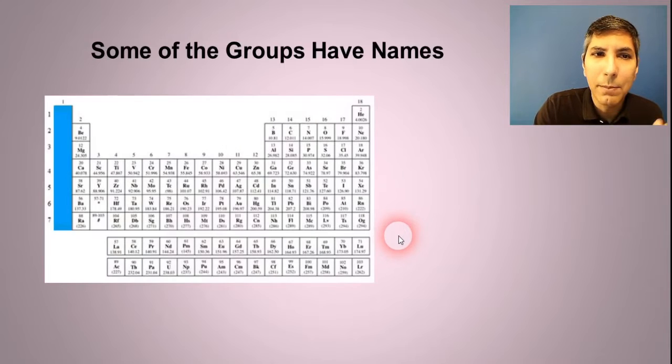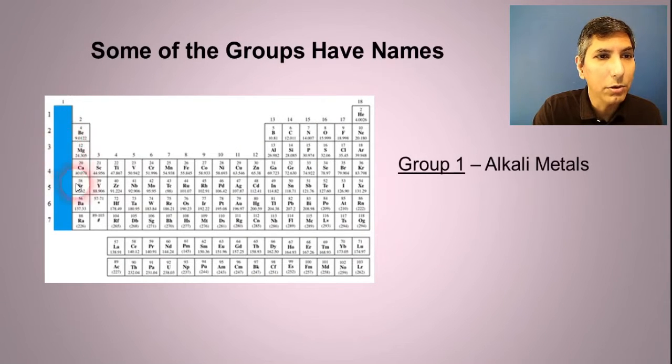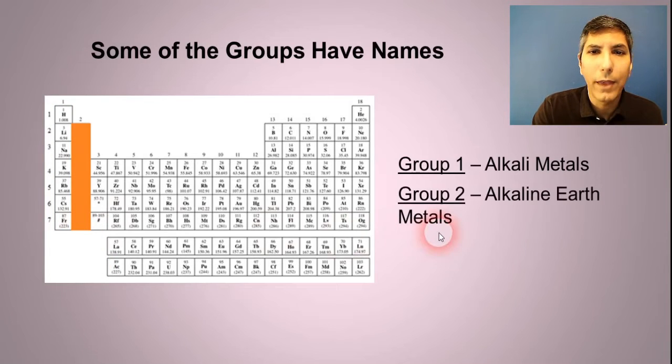Now some of these groups do have names that you need to be aware of. For example, group one, those are called the alkali metals. These are just names that you have to learn. Group two, those are called the alkaline earth metals. Be careful there. Sometimes students get confused between group one and group two on the table.